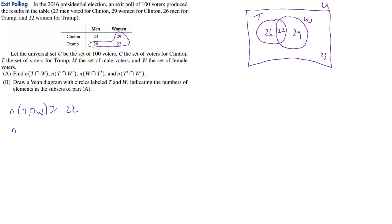How about the number in T intersect W prime? W prime is everything outside of W that intersects T. There's only 26 of those because we're not including the ones outside. So that's 26.